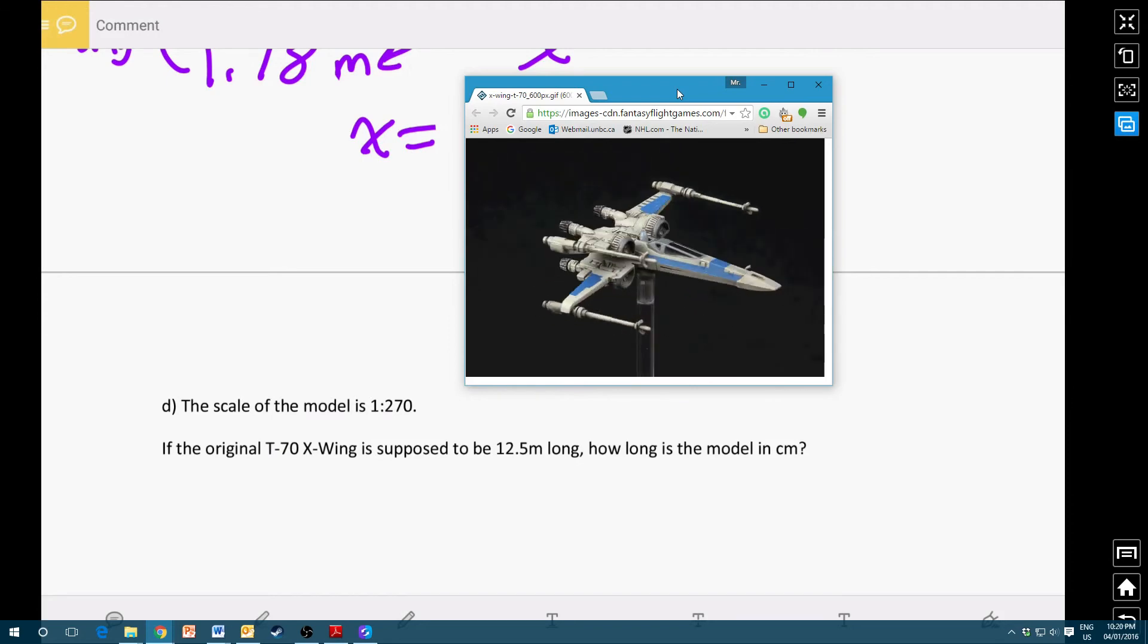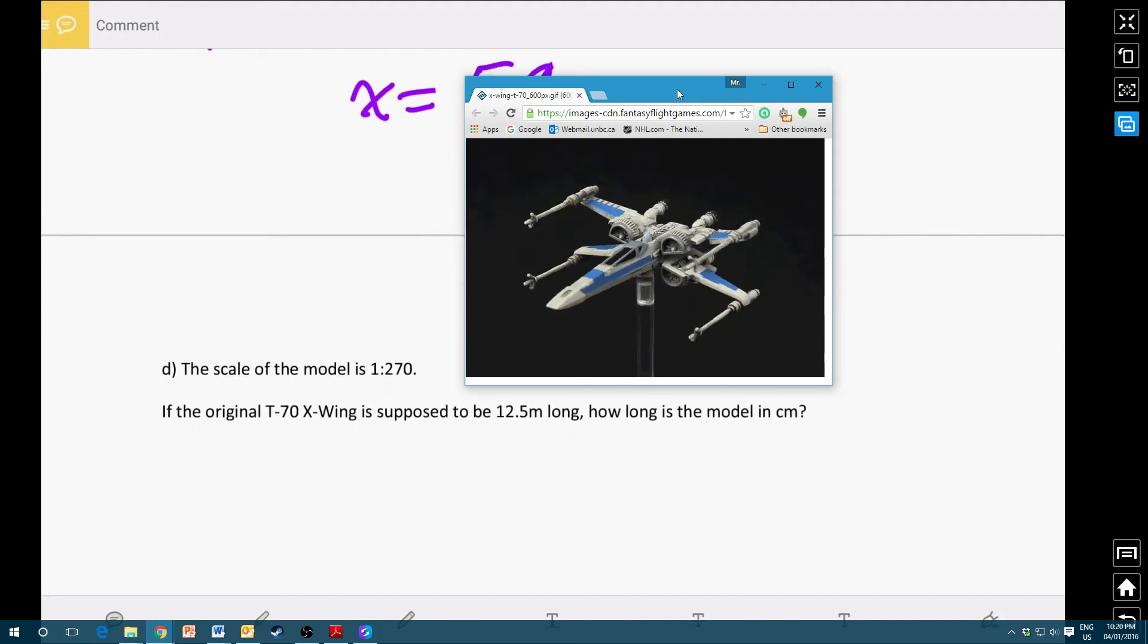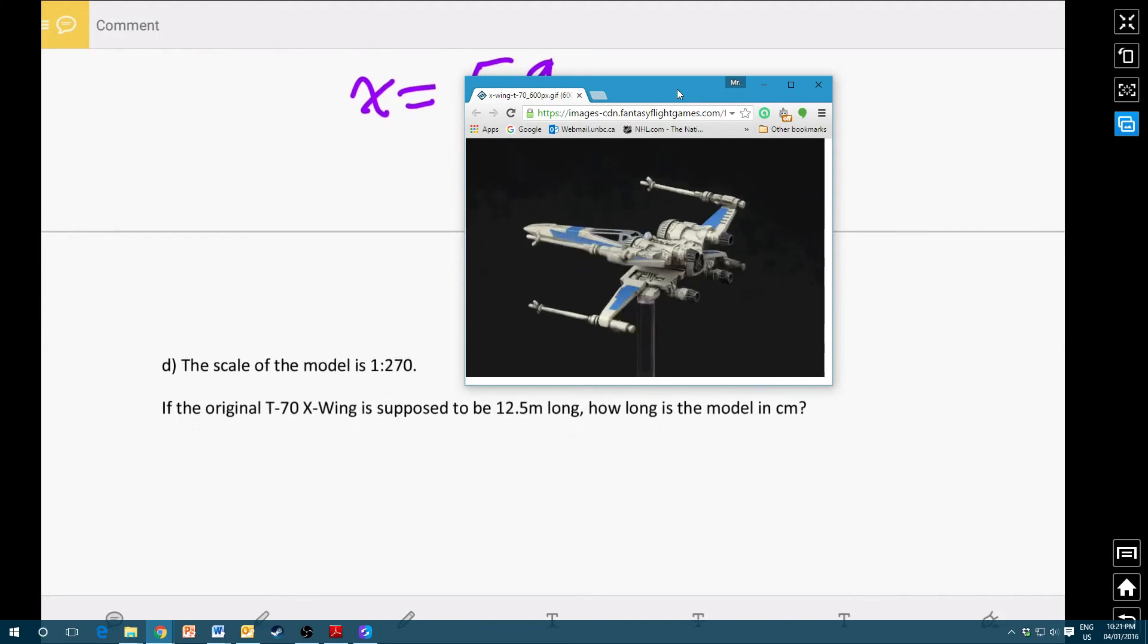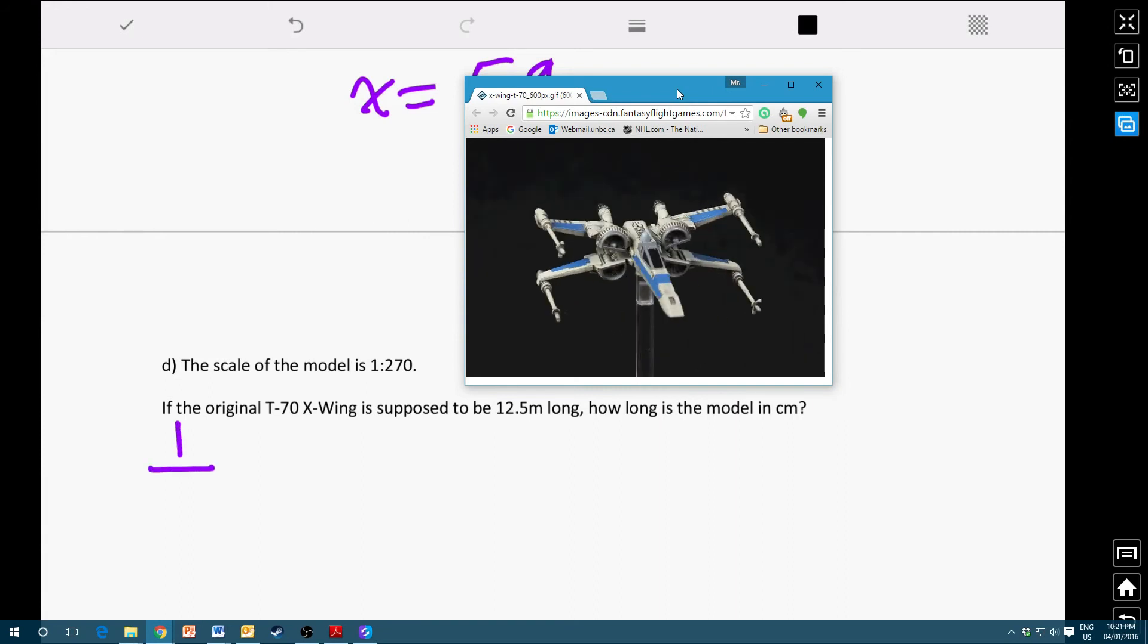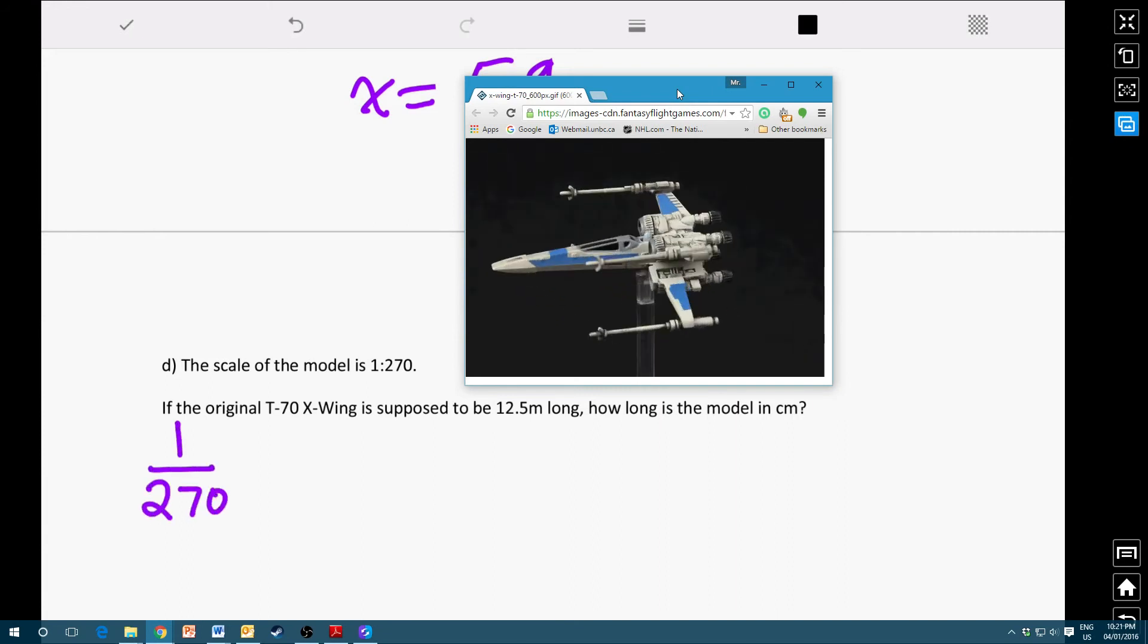Now, what this particular question is asking is, if the original T-70 X-Wing is supposed to be 12.5 meters long, how long is this model in centimeters? Well, for this, we have the scale statement, the original measurement is 1 to 270. So 1 to 270, basically we can write it as 1 over 270 equals.